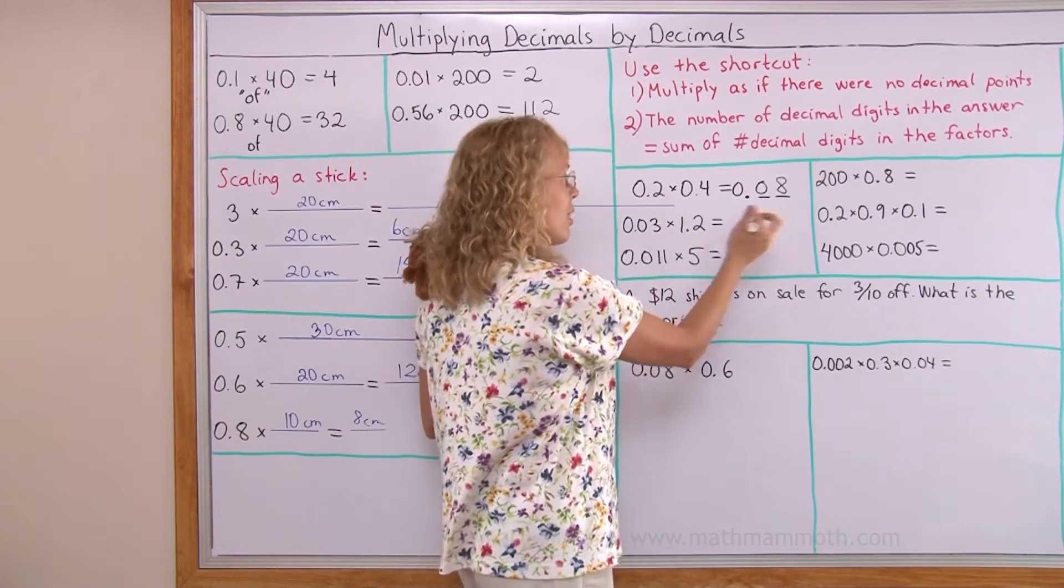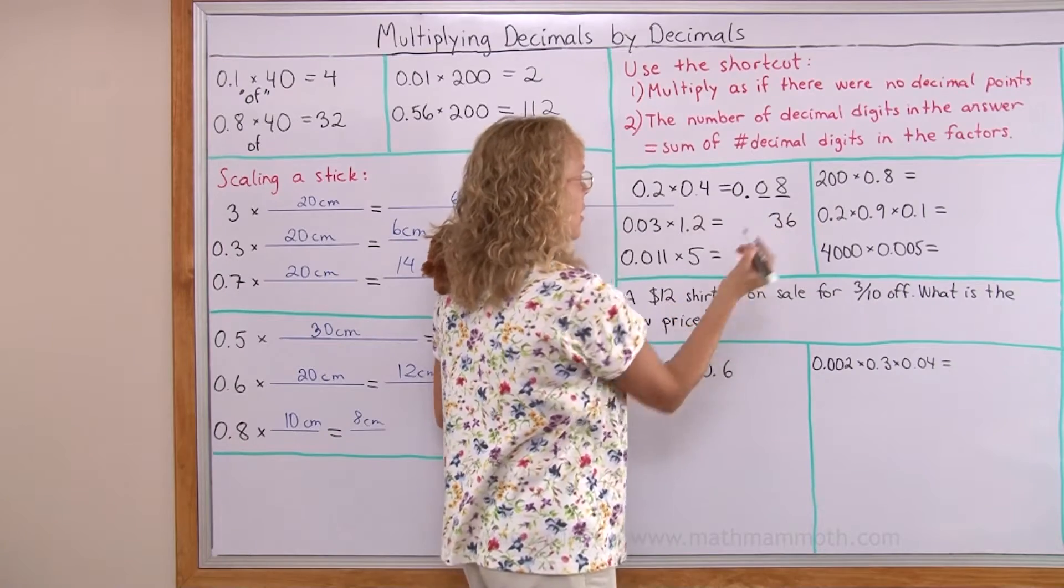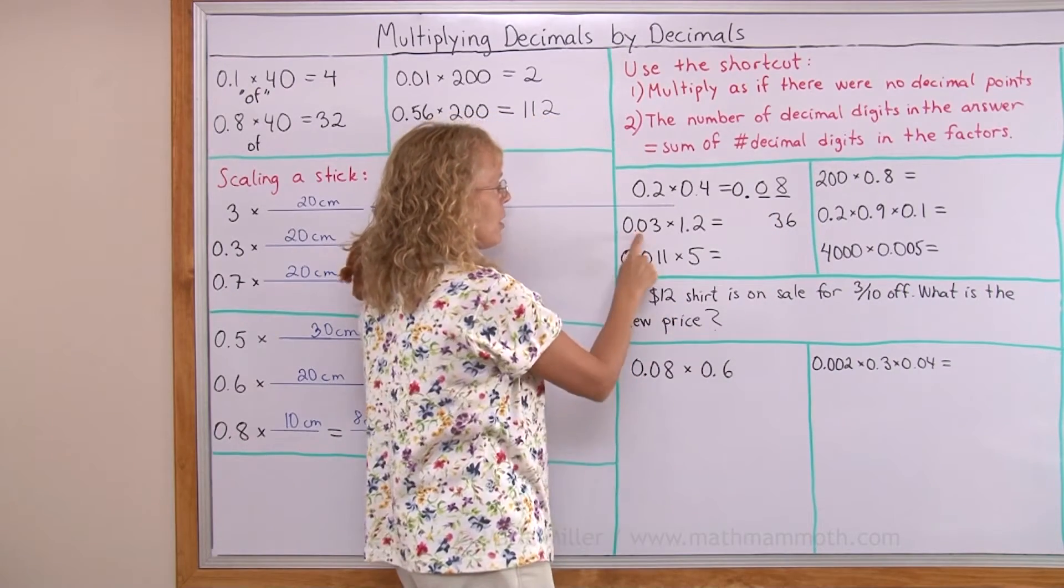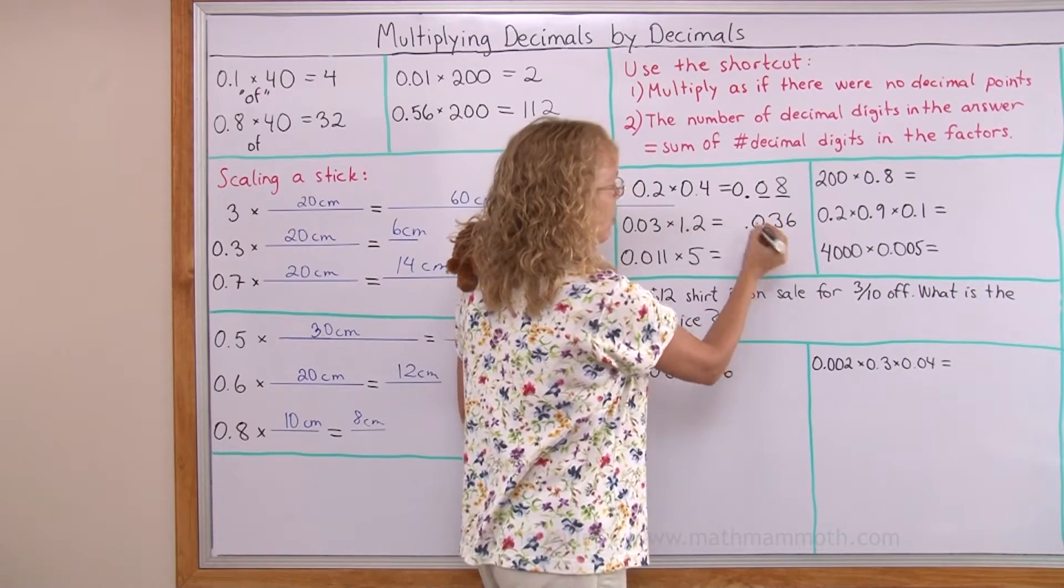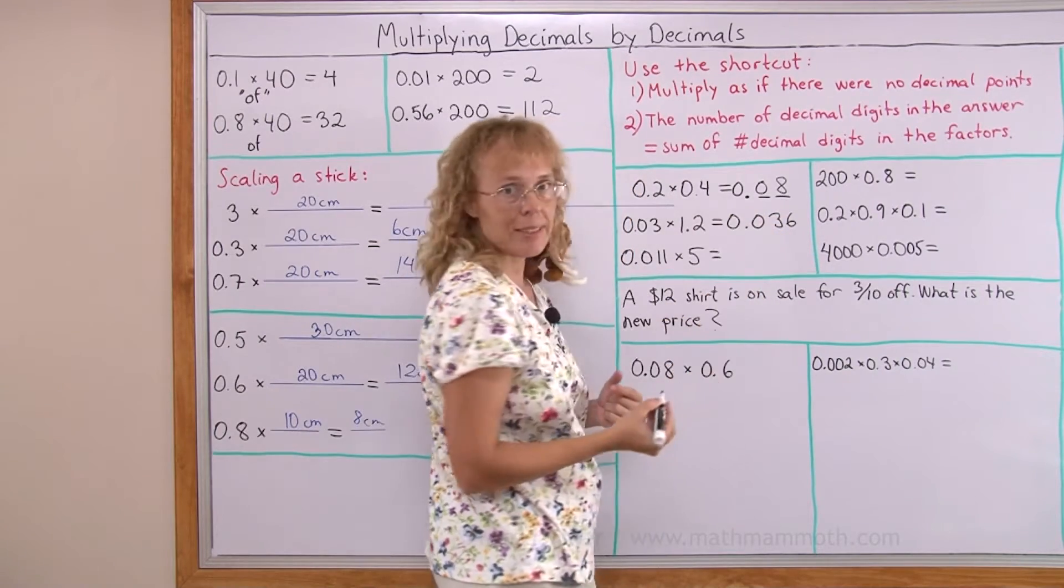Here three times twelve, thirty-six. And now I count my decimal digits. One, two and three. I need three here. So I need to again put the zero here. Like that.